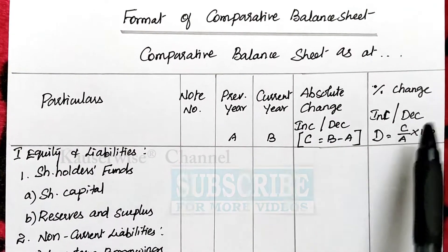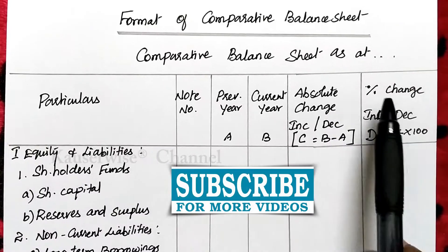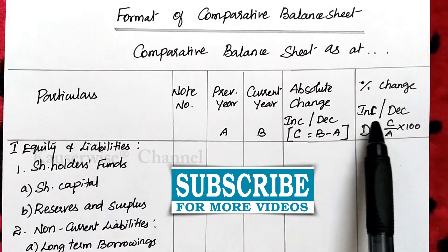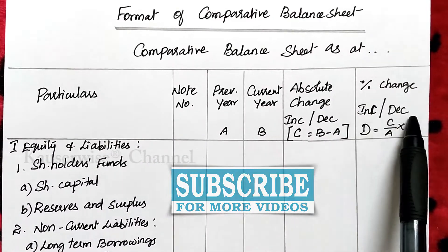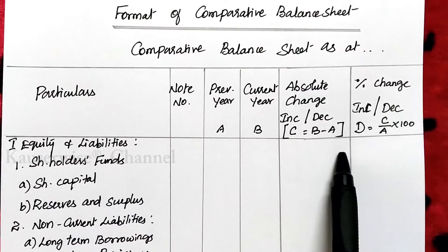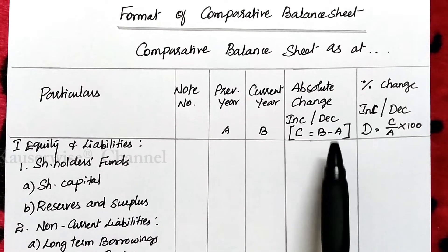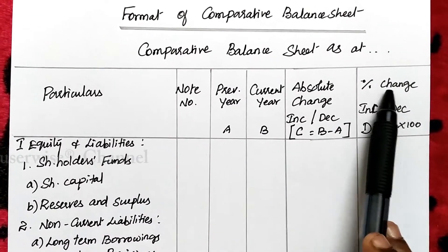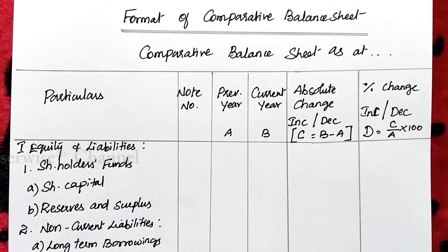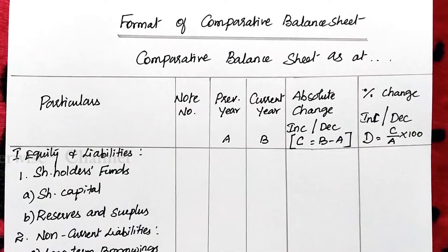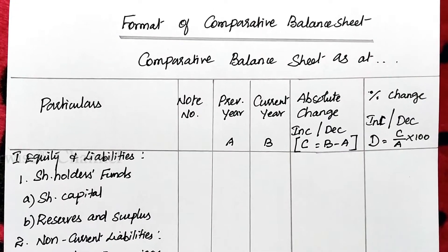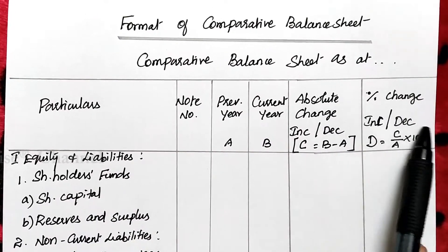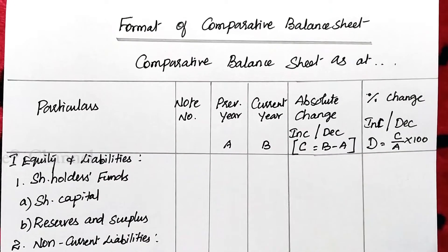The last column is percentage change of increase or decrease. Whatever the absolute change result is, we need to find out the percentage — that is, how much proportion the change is. That will be calculated using a formula.